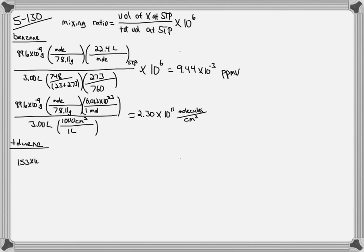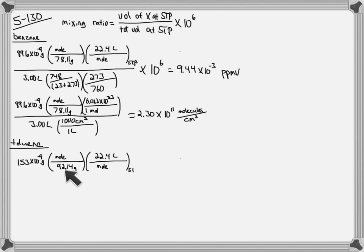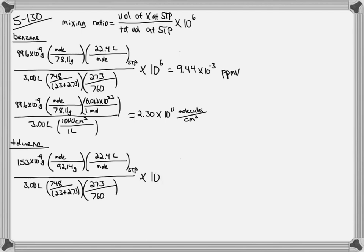The second part is to do the same thing for toluene. The only difference is there's a different mass of toluene and a different molar mass, but the setup is otherwise exactly the same. We take the mass of toluene — 153 nanograms — convert it into moles by dividing by the molar mass, then multiply by 22.4 to get moles into liters at STP. We divide by the volume of the gaseous mixture at STP and multiply by 10 to the 6th, and we get 1.37 times 10 to the negative 2 ppmv.